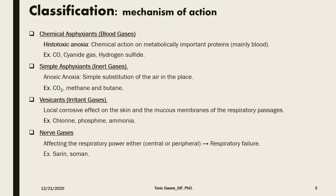There are many classifications for gases but for the sake of this lecture we will be discussing the mechanism of action. The first kind are called chemical asphyxiants or blood gases. These gases cause histotoxic anoxia through chemical action on metabolically important proteins such as blood. They bind to the metabolically important proteins in the blood. Examples would be carbon monoxide, hydrogen sulfide, and cyanide gas.